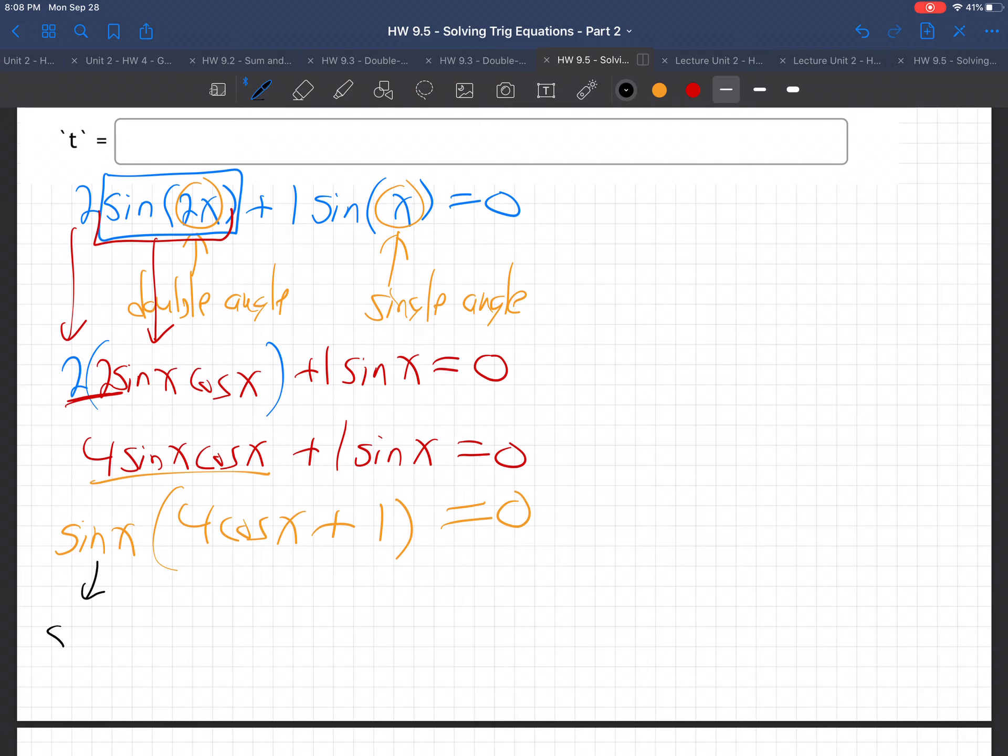Now where do we go from here? We set each part equal to 0. The sine of x equals 0 or the other part, 4 cosine x plus 1 equals 0. So each part equals 0. Now why? Why can you do that? Well, because if two things are multiplying to equal 0, either one could be 0 to make that true. You know what I mean? If I told you, hey, I'm thinking of two numbers and I'm timesing them, I'm multiplying them in the end.